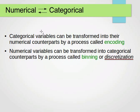We mentioned this before. Categorical variables and numerical variables can be transformed into each other. Encoding is categorical to numerical. Binning is numerical to categorical.